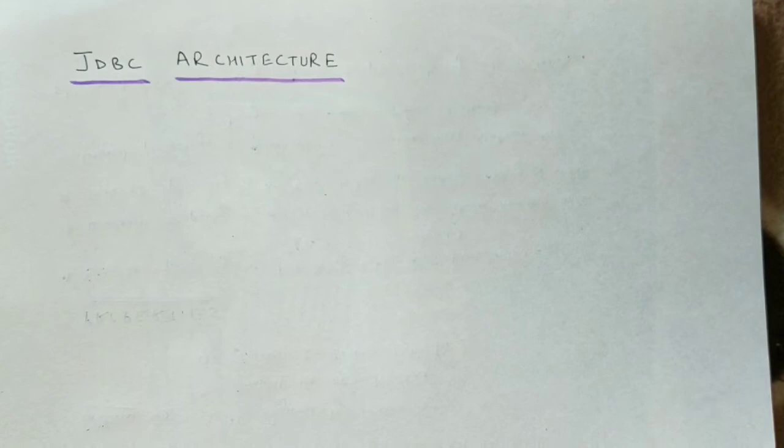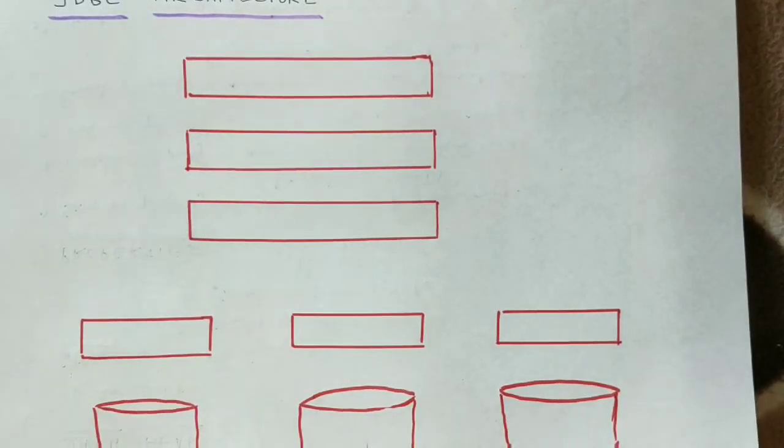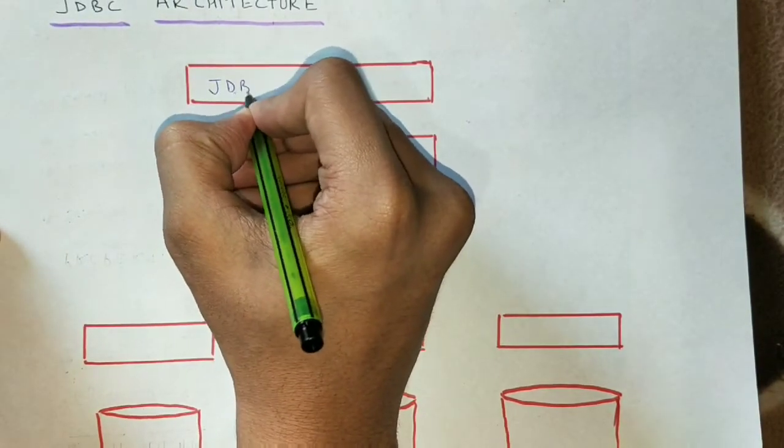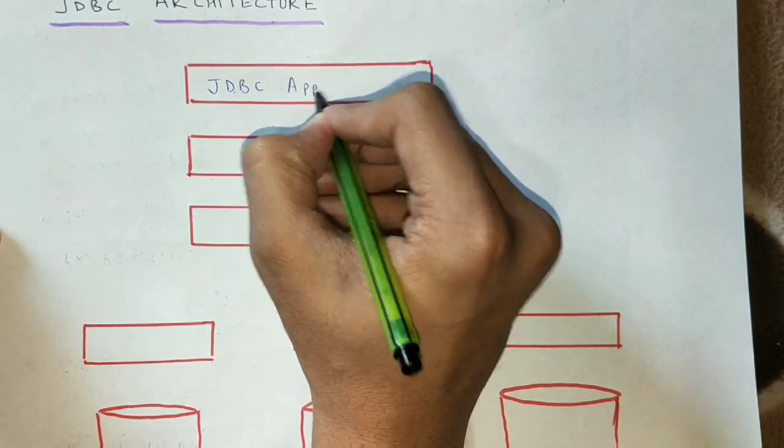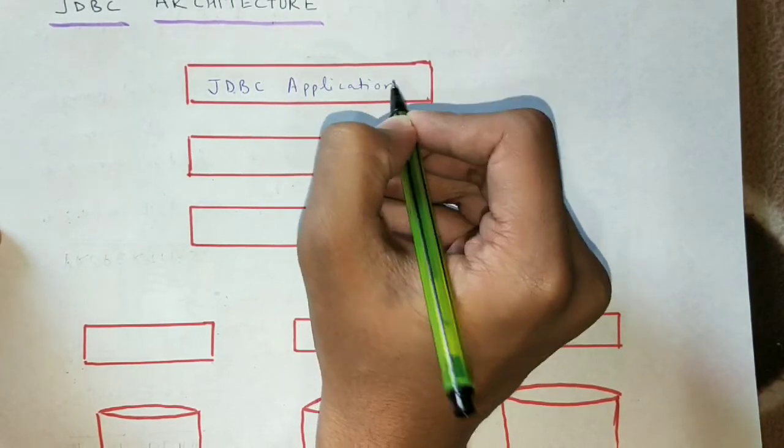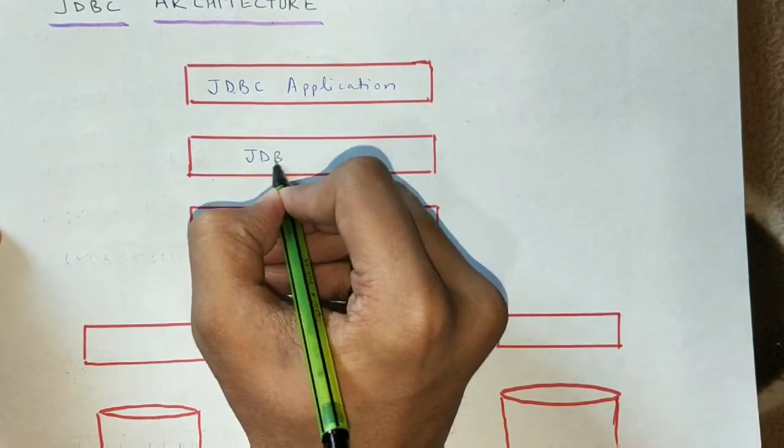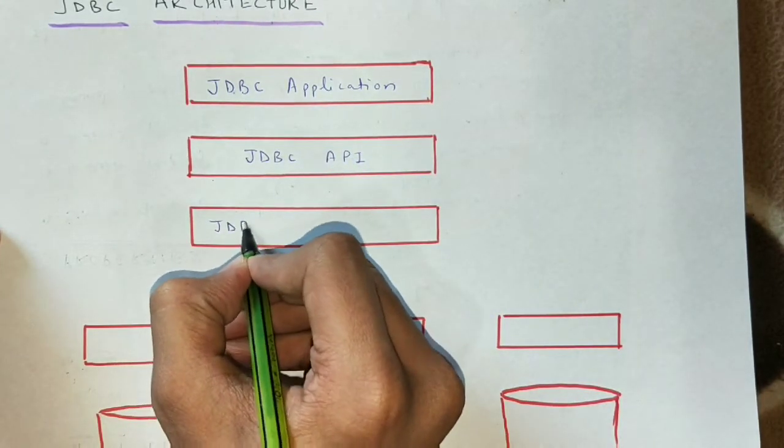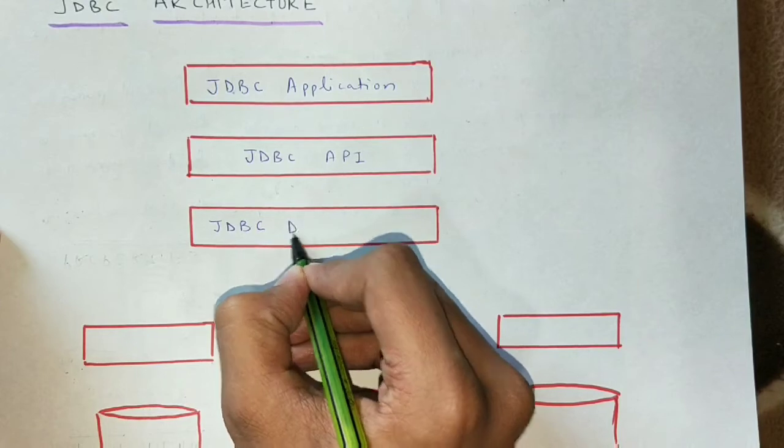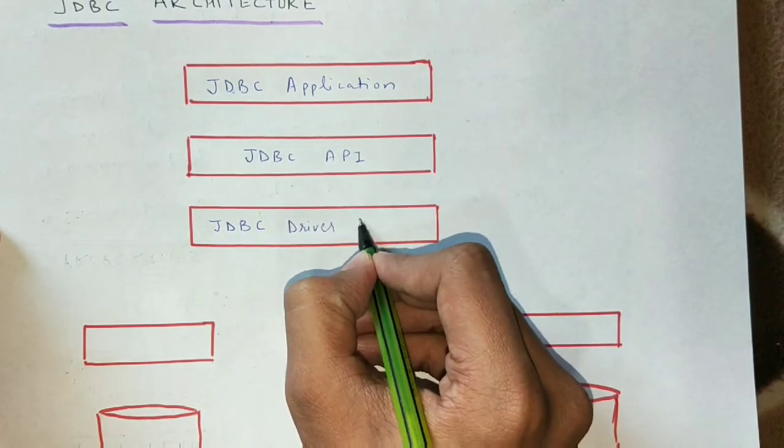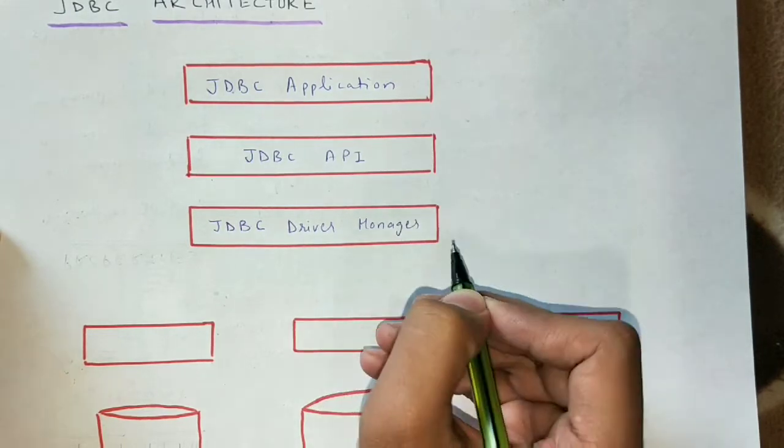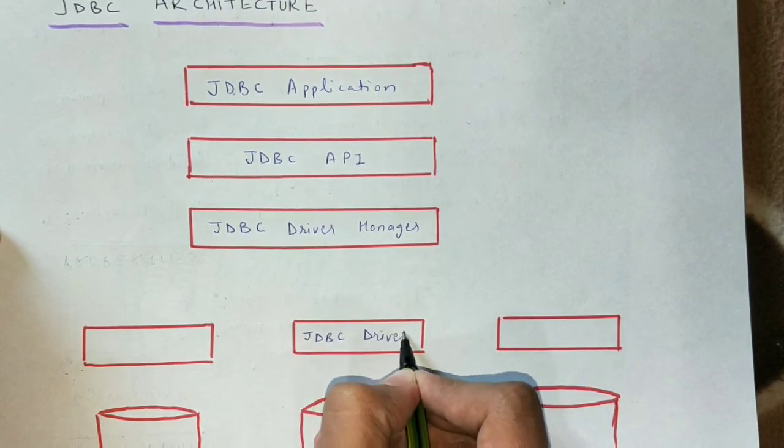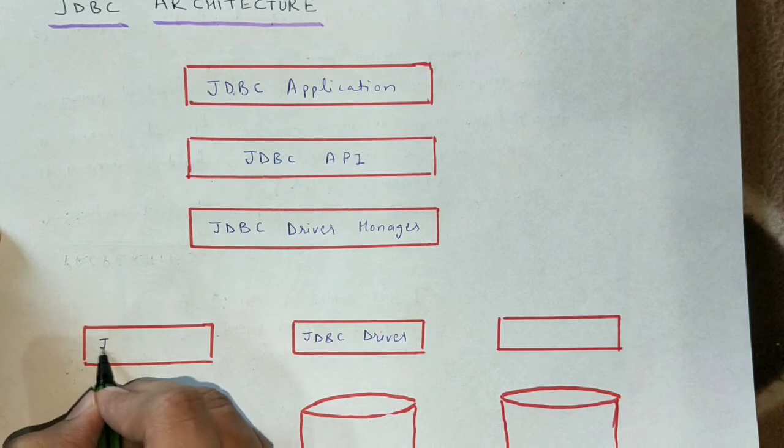Now, let's look at JDBC architecture. Here we have JDBC application, JDBC API, JDBC driver manager, and then we have JDBC drivers for different types of databases.